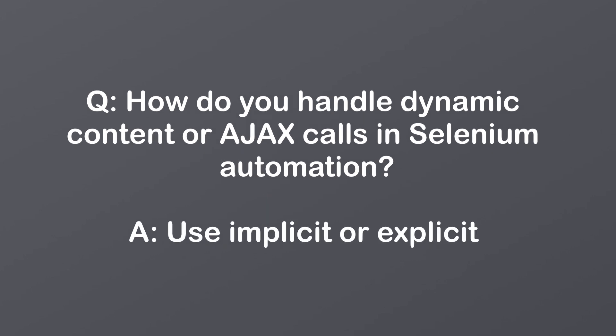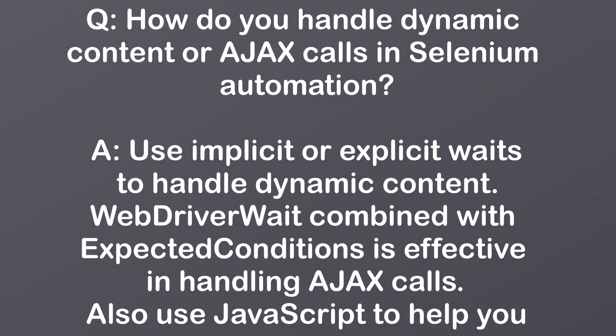How do you handle dynamic content or AJAX calls in Selenium automation? Use implicit or explicit waits to handle dynamic content. WebDriverWait combined with expected conditions is effective in handling AJAX calls. You can also incorporate JavaScript.